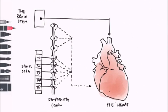The brainstem holds the nucleus of the vagus nerve, and from there we see the parasympathetic fibres that reach the pacemakers of the heart — the SA node and the AV node — and slow down the conduction.